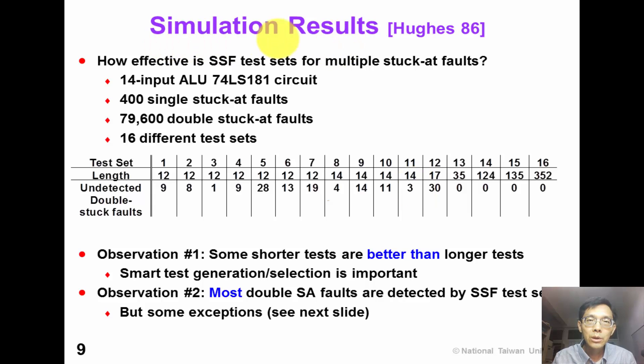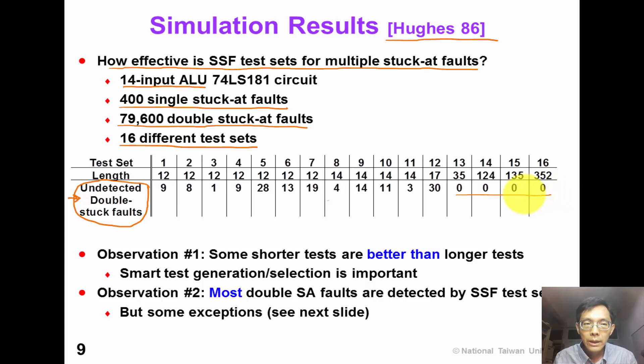This slide shows experimental results performed by Hughes in 1986. The purpose of this research is to evaluate how effective single stuck-at fault test set is for multiple stuck-at faults. They use 14 input ALU as the circuit for experiment. It has 400 single stuck-at faults and almost 80,000 double stuck-at faults. They apply 16 different test sets. This row shows the number of undetected double stuck-at faults, which means the smaller the number is, the better the test quality it is. We can see that for the last 4 test sets, they do not have any undetected double stuck-at fault. That means they detect all the double stuck-at faults.